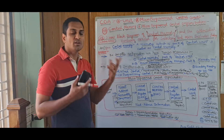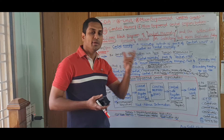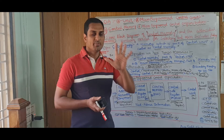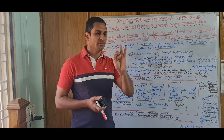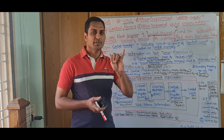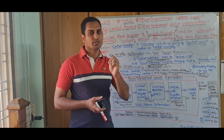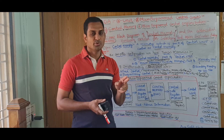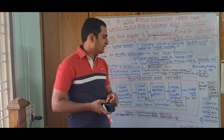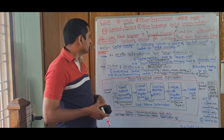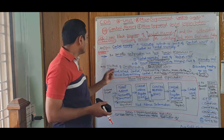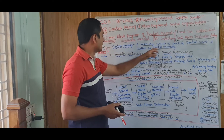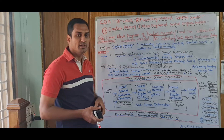What is control memory? A memory which is a part of the control unit is called control memory. Generally in a computer we have five units: input unit, output unit, memory unit, control unit, and ALU — arithmetic logic unit. ALU and control unit are part of the processor; input and output units are part of input/output devices. Remember: control memory is a part of the control unit.